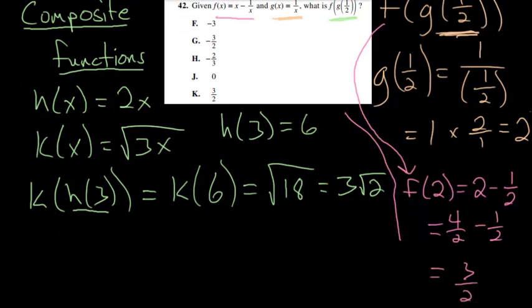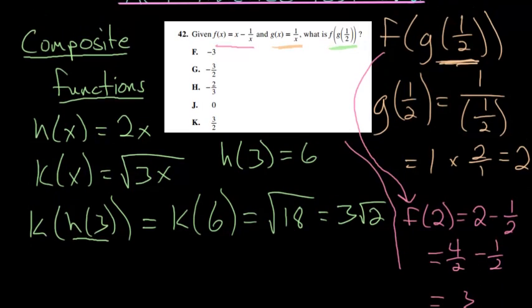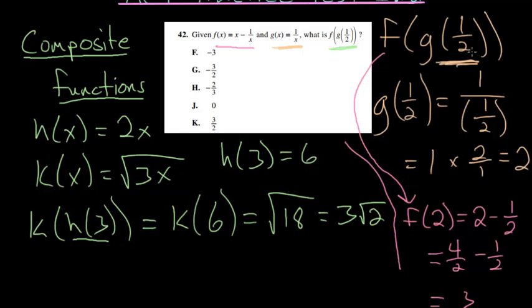So the end result of our composite function evaluated at 1 half is that f of g of 1 half is equal to 3 halves. And that is our final answer.